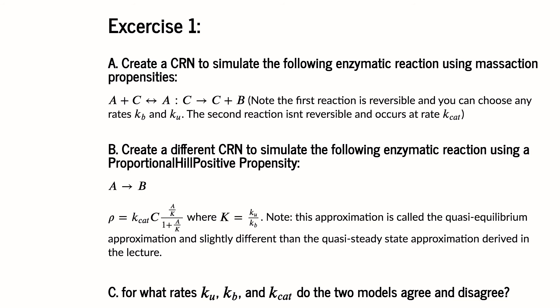So the first exercise is to examine this Michaelis-Menten kinetics, although here we're basically having A. Yeah, A is being converted to B. And I want you to simulate this. So write out this as a mass action chemical reaction network.